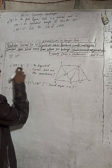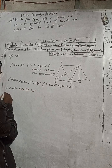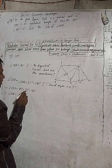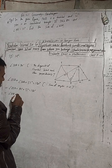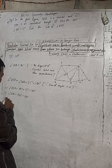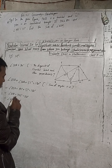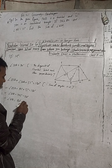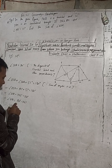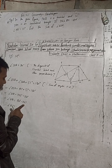Angle OSR plus angle SRO — which is 90 degrees — plus 55 degrees equals 180 degrees. This implies angle OSR plus 145 degrees equals 180 degrees. Therefore angle OSR equals 180 minus 145, which is 35 degrees.